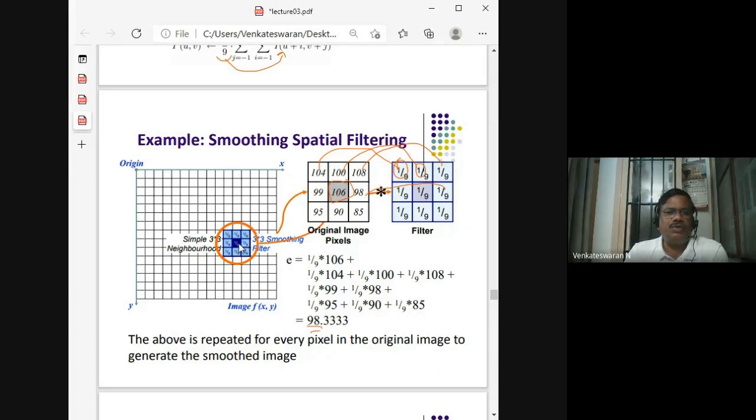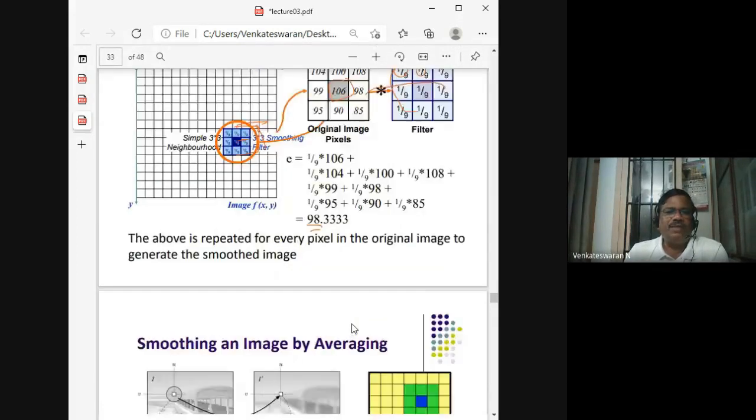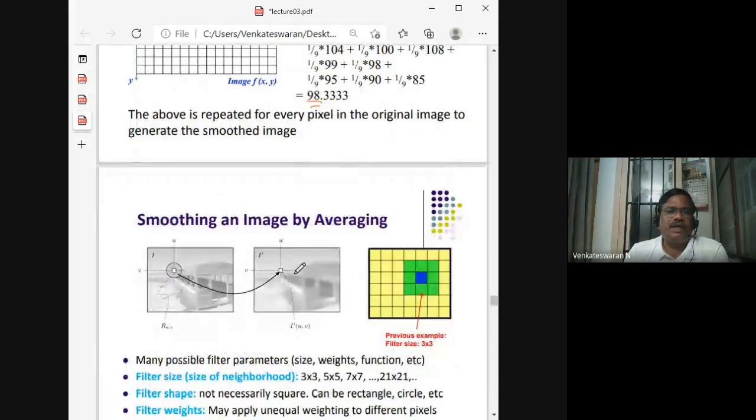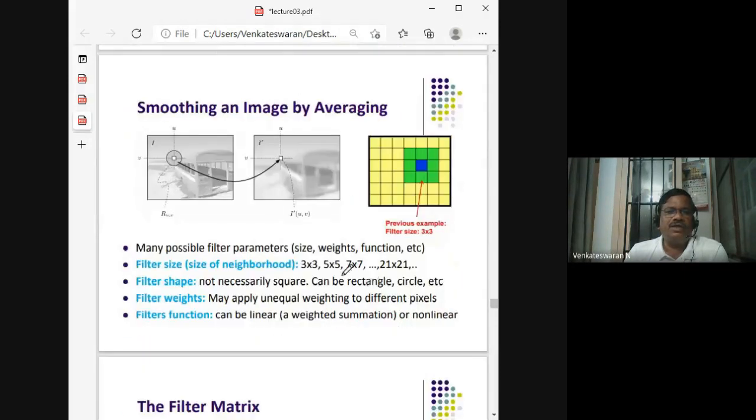If you wanted to do the next pixel, you move this smoothing filter to the next pixel location, and then new neighboring pixels are identified and the same filter is used. You multiply every pixel by this 1/9 and add them, so you get a new value. For every pixel value like that, you keep shifting this pixel location.